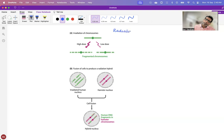Radiation hybrid mapping. This is a slight modification of somatic cell hybridization, which we have discussed in our previous lecture.